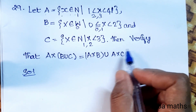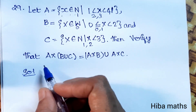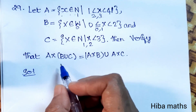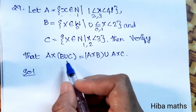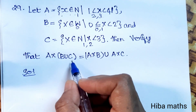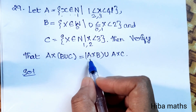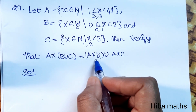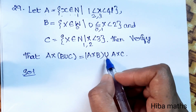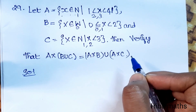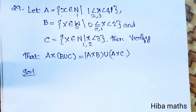The question asks to verify that A cross (B union C) is equal to (A cross B) union (A cross C).